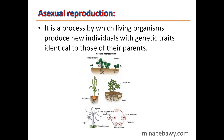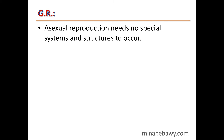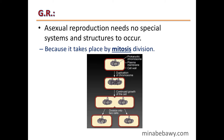Asexual reproduction is a process by which living organisms produce new individuals with genetic traits identical to those of their parents. Asexual reproduction needs no special systems and structures to occur, because it takes place by mitosis division only — starting with one cell and ending with two cells, without any need for special organs for reproduction.